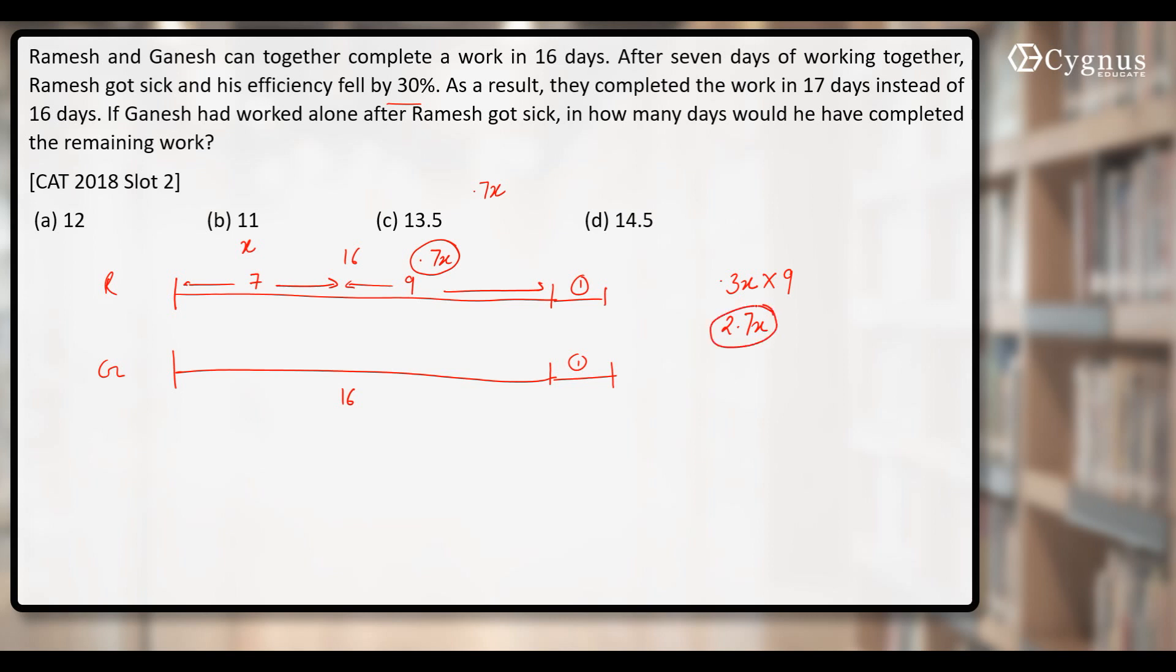Now, this was compensated by both Ganesh and Ramesh. They work together for one extra day. Ganesh one day's work is, let's say G. And Ramesh, this one day's work will be reduced efficiency, that is 0.7X.